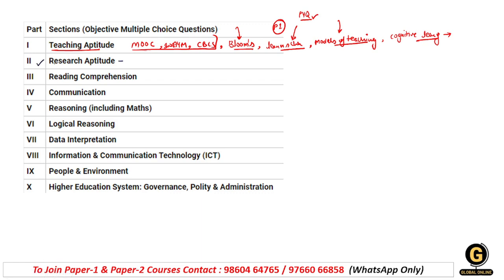Ab baat karte hain research aptitude unit ki. Is unit mein se hameshaa ki tarah NTA ne kaafi zyada questions puche the, aur easy level ke questions zyada the - bahut zyada difficult questions yahan se nahin aaye. Pehla ek expected question tha woh tha research ke ethics mein se, aur ek aap logon se sampling ke methods. Students ne bataya ki ek real life example diya gaya tha jismein ki kuch random sampling se related question pucha gaya tha. Ek naya topic is baar add kiya gaya tha - woh hai scale se related.